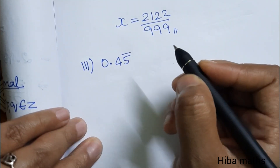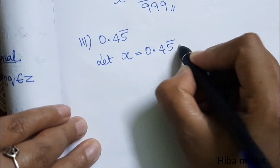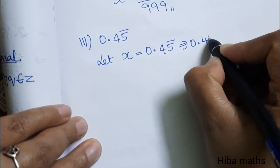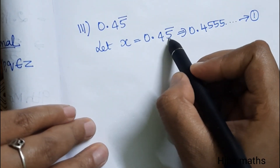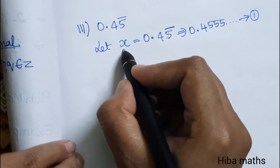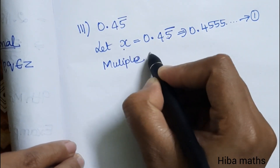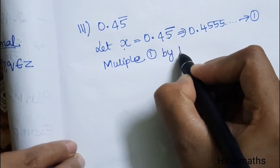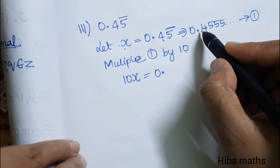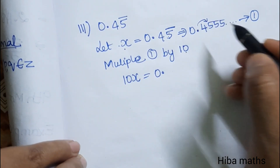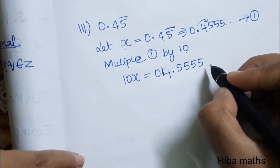The next question is 0.45555... The period of the decimal is the digit 5, which is 1 repeating digit. So multiply equation 1 by 10. Equation 1 multiplied by 10: 10x equals 4.5555... This is equation 2.